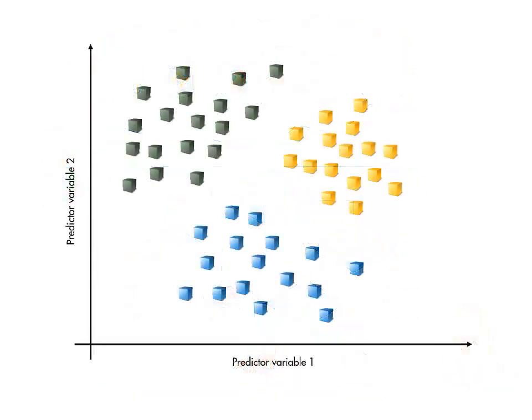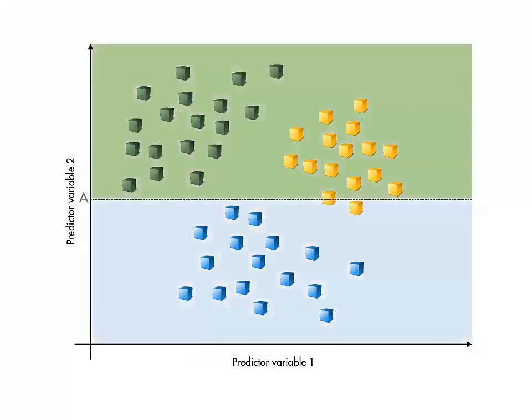Given the training data, the decision tree is built by considering all the possible splits in each variable. Using a given criterion for how good a potential split is, the best possible split is chosen.